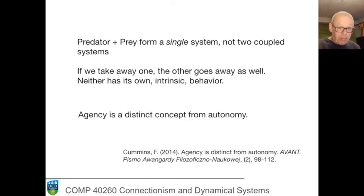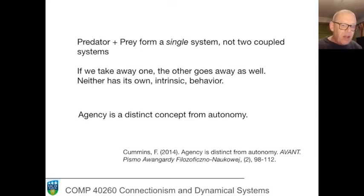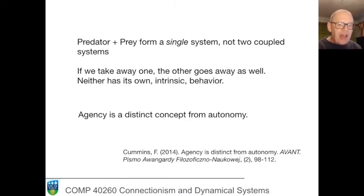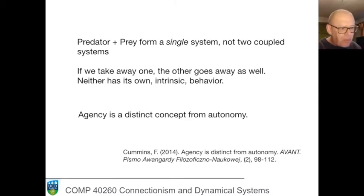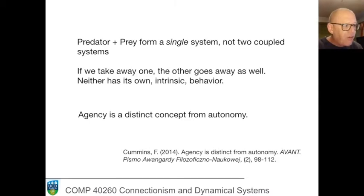You might think a predator is an agent and a prey is an agent, but this demonstrates clearly that in our discussions around autonomy, when it comes to interactions, agency is a distinct concept from autonomy. This is something I've got a bit of a bee in my bonnet about — there's an article about it if you're interested.